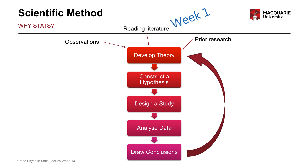Whatever those conclusions are, you then use that information as new knowledge to further refine or develop the theory. That's the scientific method process, and as you can see, the actual stats part is a really small part of the entire process. It's more important that you think about the research process as a whole — how stats falls into the bigger context — and understand getting new information in this kind of holistic perspective.